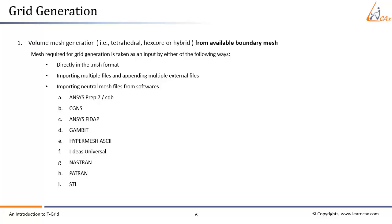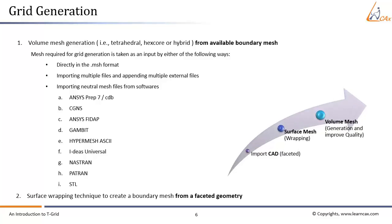Please note that T-Grid cannot read grids from solvers that have been adapted using hanging nodes. Second, the surface wrapping technique is used to create a boundary mesh from a faceted geometry. Geometries exported from various CAD packages often contain gaps and overlaps between the surfaces. Repairing such geometries manually is a tedious and time-consuming process. The wrapper provides the ability to create reliable meshes for such geometries without extensive manual cleanup, reducing the time required for pre-processing. The wrapper can account for gaps and overlaps at the expense of a certain degree of geometry detail of the model, and it can handle unclean geometries without requiring a watertight representation.